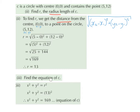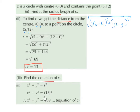For Part 3, find the equation of C. Since this circle has a center of (0, 0), we use x² + y² = r². We found the radius to be 13 in Part 2, so we substitute: x² + y² = 13² = 169. Therefore x² + y² = 169 is the equation of circle C.